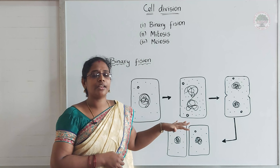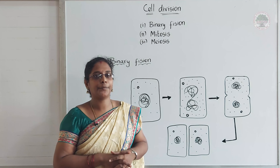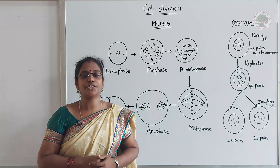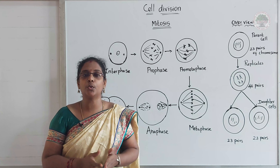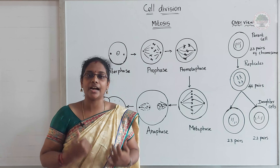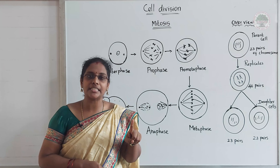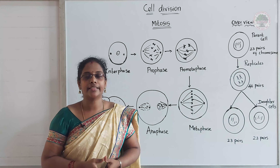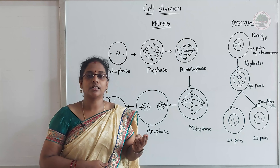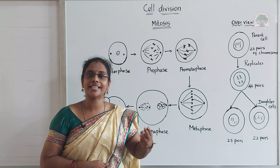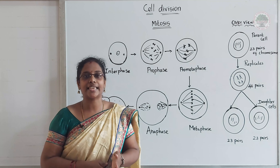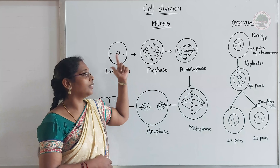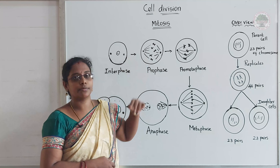Mitosis and binary fission are mostly similar. Before discussing mitosis cell division, we need to know that there are two different kinds of cells in our body. The first is somatic cells, also called body cells. The second kind is gametes, also called sex cells. Mostly, somatic cells are divided by the kind of mitosis — mitotic cell division.